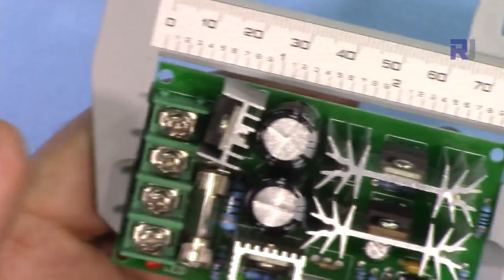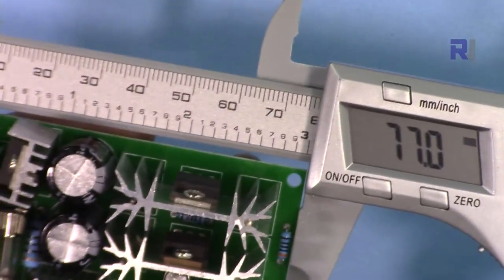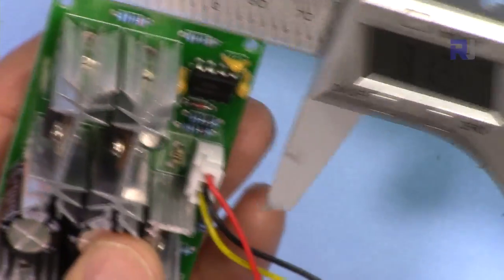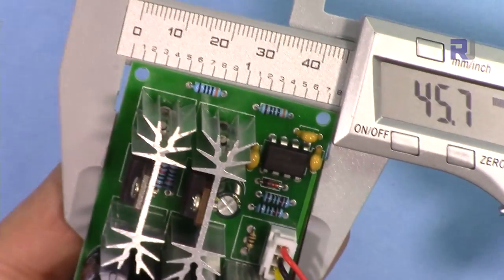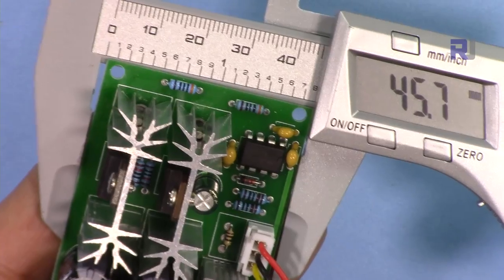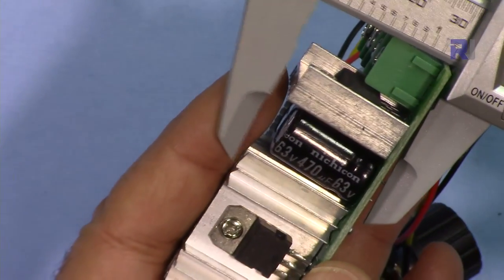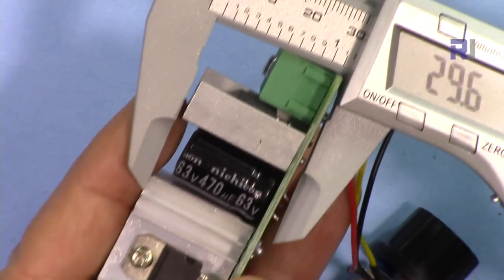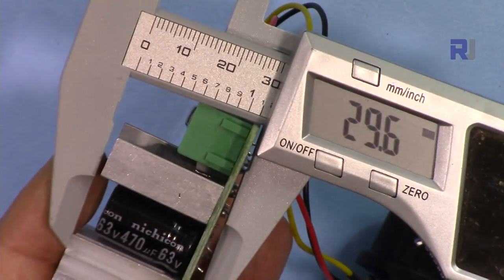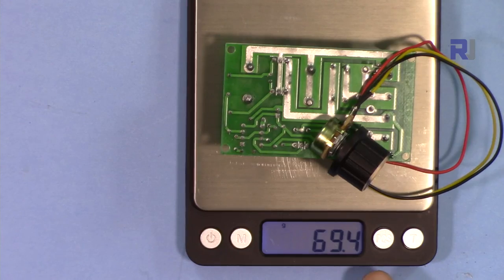Length of this module is 77 millimeters. The width is 45.7 millimeters. Height of this module is 29.6 millimeters. Weight is 69.4 grams.